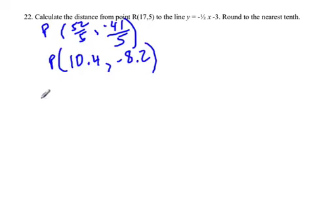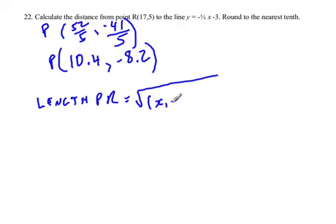Now I want to find the distance between points P and R. We have to find the length of line segment PR. We're going to use our formula from before, which is the square root of (x₁ minus x₂) squared plus (y₁ minus y₂) squared.